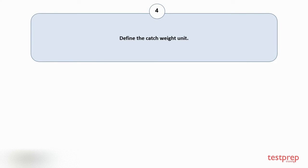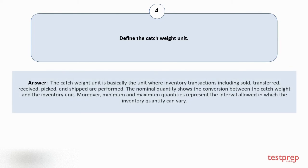Question number 4: Define the catchweight unit. The catchweight unit is basically the unit where inventory transactions including sold, transferred, received, picked, and shipped are performed. The nominal quantity shows the conversion between the catchweight and the inventory unit. Moreover, minimum and maximum quantities represent the interval allowed in which the inventory quantity can vary.